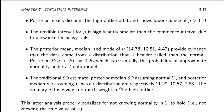The traditional standard deviation estimate, the posterior median standard deviation assuming normal Y, and the posterior median standard deviation assuming a t-distribution are 11.29, 10.6, and 7.9 respectively — getting smaller. The ordinary standard deviation gives too much weight to the high outlier. The analysis using a t-distribution has the proper penalty for not knowing whether normality holds. If you try to test for normality and then decide whether to use a t-test, you're assuming that test has power of 1 and making a dichotomous decision about normality.